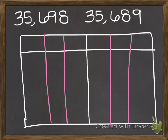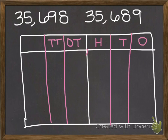So I can label the chart: ones, tens, hundreds, one thousands, ten thousands, hundred thousands.